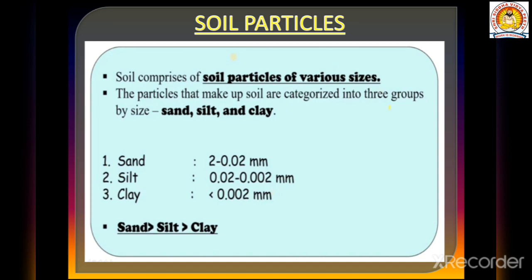The sizes of the three particles are: sand is 2 to 0.02 micrometers, silt is 0.02 to 0.002 micrometers, and clay is less than 0.002 micrometers. So sand is greater than silt, and silt is greater than clay.